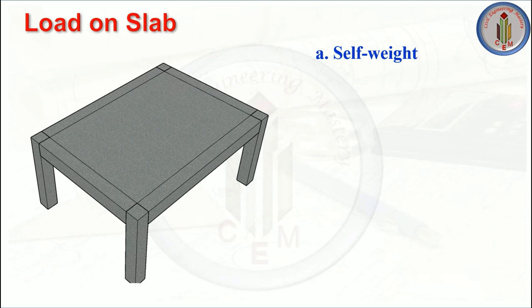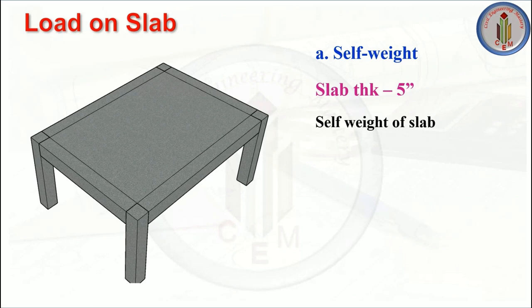Let's calculate the self weight. For calculating self weight, we need to know the thickness of the slab — here thickness is considered as 5 inches (125 mm). Self weight is calculated as thickness multiplied by the unit weight of RCC: 125 mm × 25 kN/m³ = 3.125 kN/m². This is the self weight of the slab.